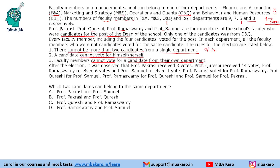After the election, the votes received were: P received 3 votes, Q received 14 votes, R received 6 votes, and S received 1 vote. It is also given that P voted for R, Q voted for S, R voted for Q, and S voted for P.